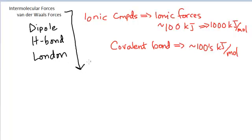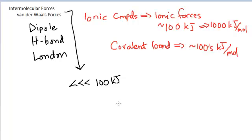In order to melt or boil a covalent compound, you do not break the bonds — you simply overcome the intermolecular forces: the dipole and/or hydrogen bonding and/or London forces. Here, you're talking about much less energy than the hundreds of kilojoules it takes to break a covalent bond. The amount of energy to melt or boil a covalent compound is not the amount it takes to break the bonds — we're simply taking the particles and moving them further away. The stronger the forces holding the particles together, the higher the melting and boiling point.